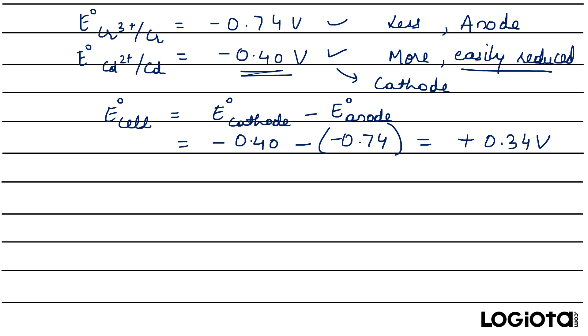So this is very easy. The more the reduction potential, the more easily it gets reduced and it means that it is a cathode.